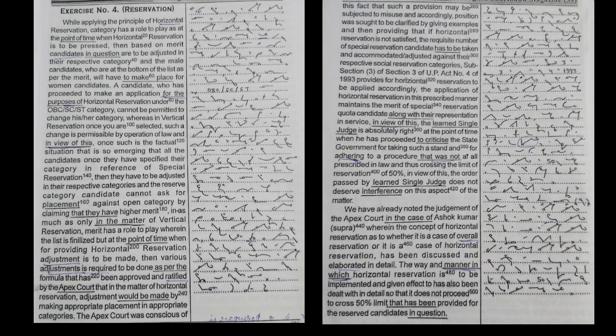Only in vertical reservation does merit have a role to play wherein the list is finalized, but when providing horizontal reservation adjustment, various adjustments are required as per the formula approved and ratified by the apex court. In horizontal reservation, adjustment is made by placing candidates in appropriate categories. The apex court was conscious that such a provision may be subject to misuse.